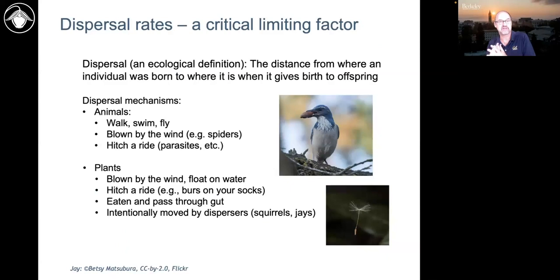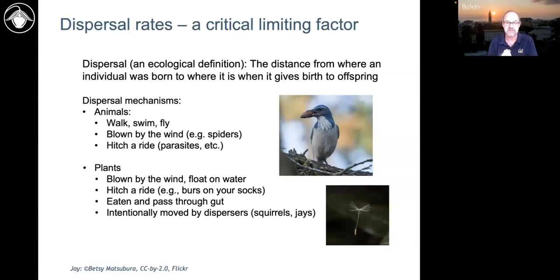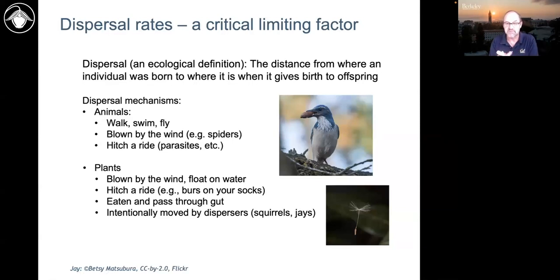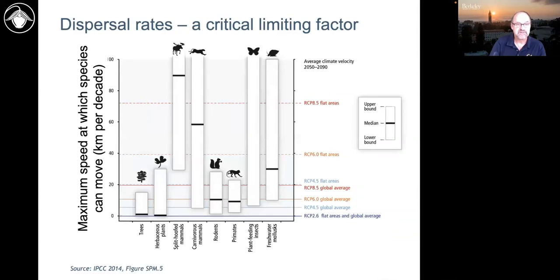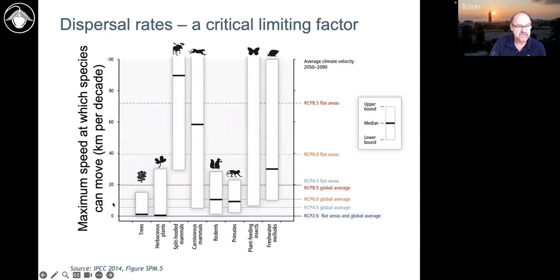That brings us to the critical factor of how fast plants and animals can move — the ecology of dispersal. Plants and animals move in many ways: by wind, by being carried by animals, being eaten and transported. The question is how fast they move. A summary from the IPCC across a lot of data asks: how fast can different groups of species move, and how fast is the climate moving? Can they keep up? The units are kilometers per decade.